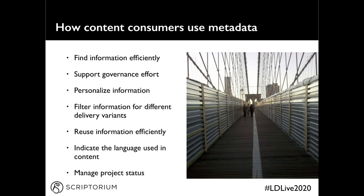After you assign metadata to your content, you or your reader can use it to find information more effectively. It can support a governance effort — for example, controlling when information is made public or removed from a website. You can personalize information so a reader can request content targeted for beginners. Metadata can be used to filter information for different delivery variants — for example, generating one output for Windows and another for Macintosh. It can also be used to manage project status. When developing a content strategy, it should always include a metadata strategy that takes into account how both content creators and content consumers will use your metadata.